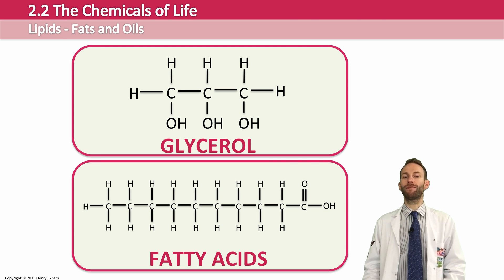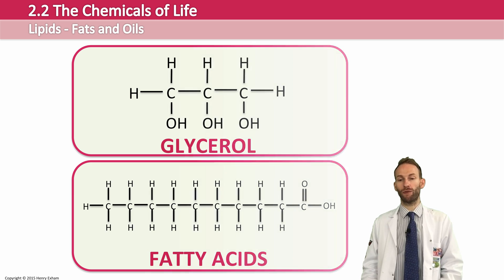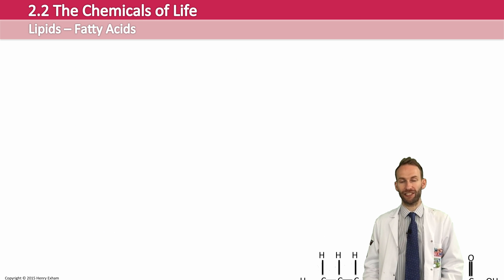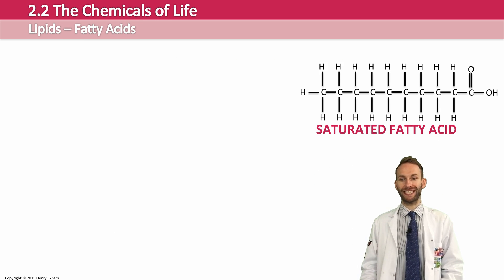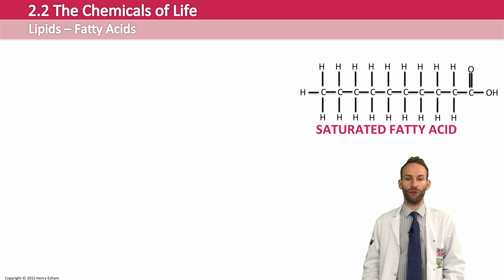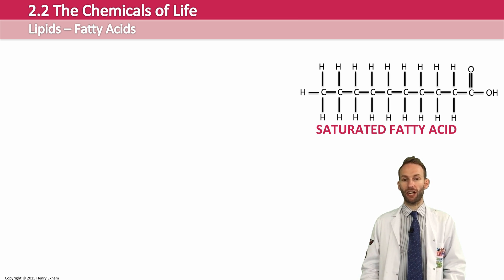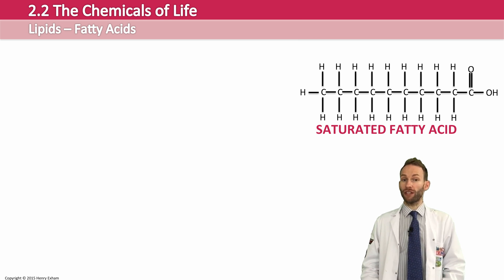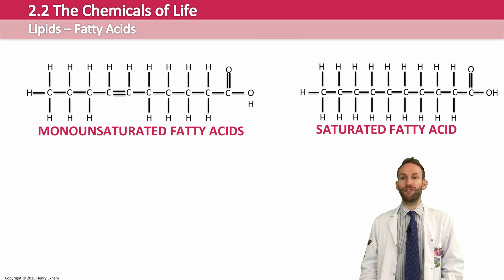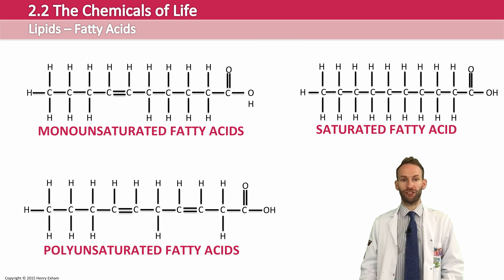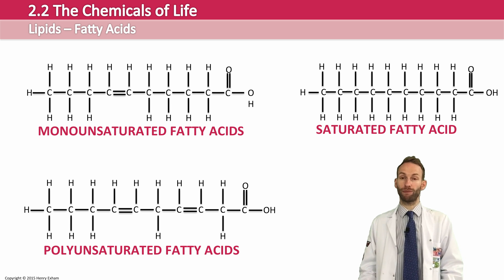If the carbon atoms in the fatty acids are all joined with a single bond, then they're what we call saturated fatty acids, and they would have the general formula CnH2nO2. But if they have one or more double bonds between the carbon atoms, then it is an unsaturated fatty acid. If it has one double bond, it's a mono-unsaturated fatty acid, and if it has more than one, it's a poly-unsaturated fatty acid. Saturated fatty acids have a much higher melting point than unsaturated fatty acids.